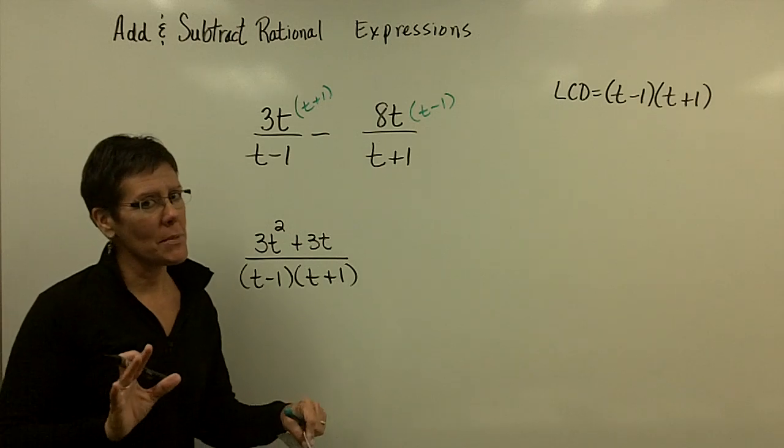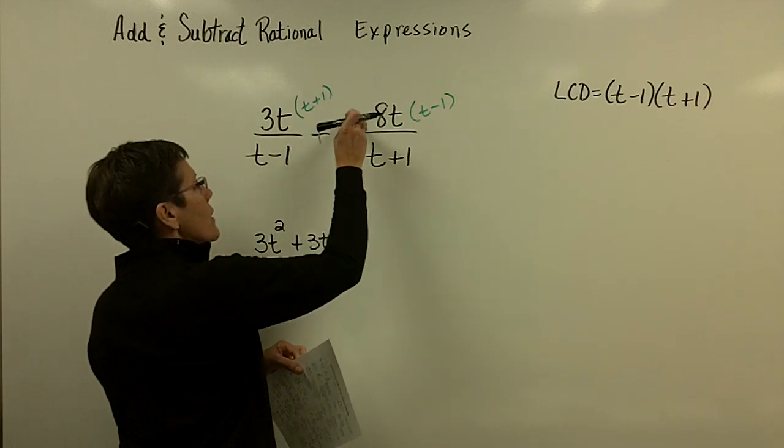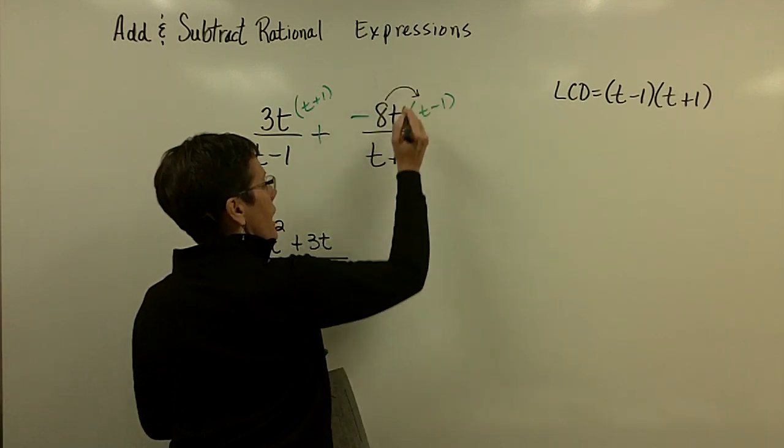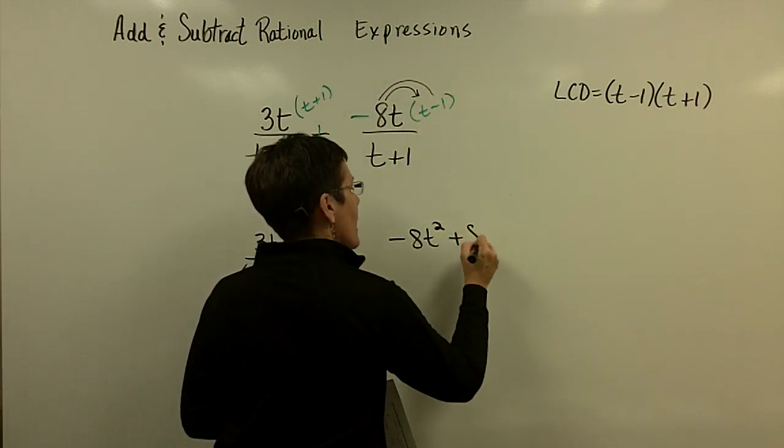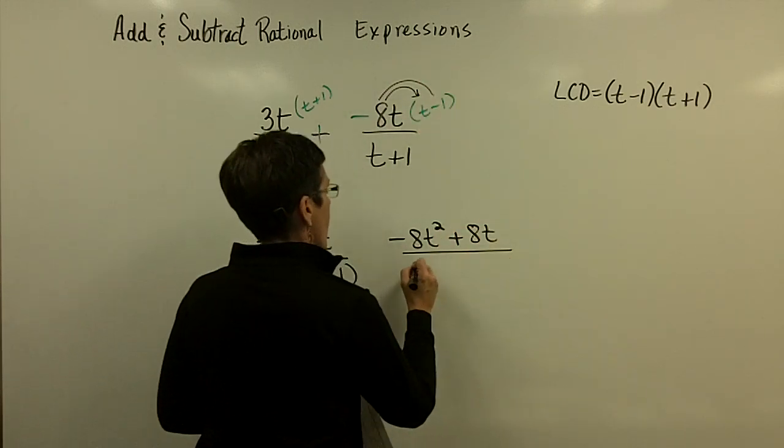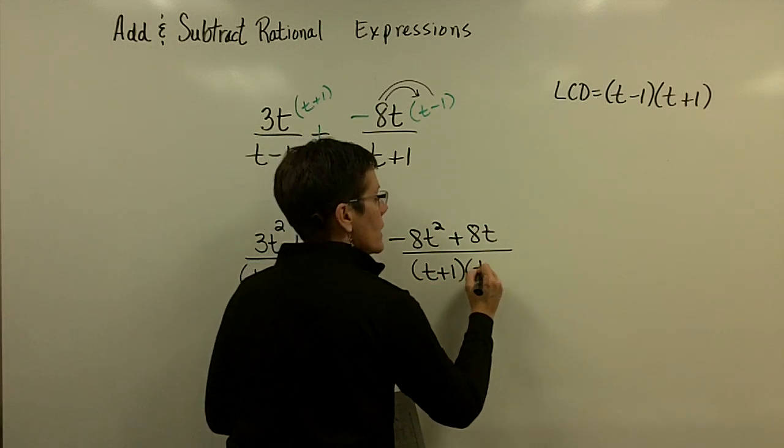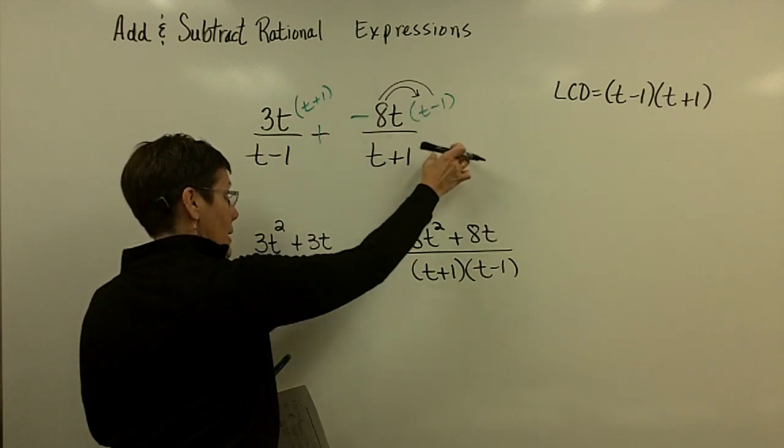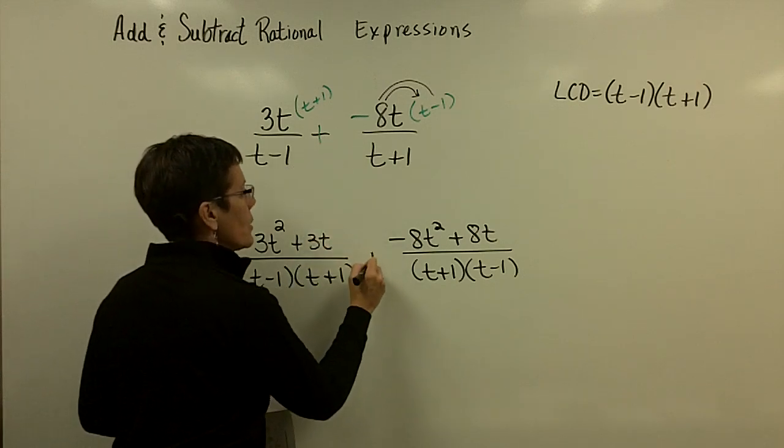If anybody would like to, right now think of that as a minus 8t, and then distribute that and call it a negative 8t squared. And this negative times this negative is a positive 8t over—remember, this denominator now doesn't have just the t plus 1, it's got the t minus 1 because I multiply top and bottom by that t minus 1.